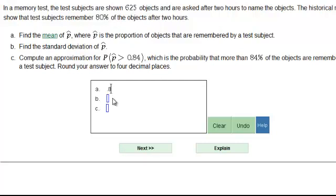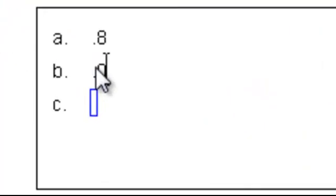So 0.4 divided by 25 is what? 0.016, I'm going to say. I hope that's right. I'm going to check it on the calculator.